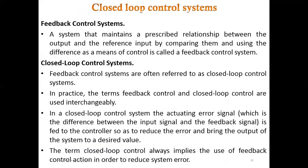In a closed loop system, the loop is closed — the feedback system is present. A closed loop system maintains a prescribed relationship between the output and the reference input by comparing them and using the difference as a means of control. This is called a feedback control system. The difference signal is fed back to the input and the input is recalibrated on the basis of that error signal. Feedback control systems are often referred to as closed loop control systems, and in practice these terms are used interchangeably.